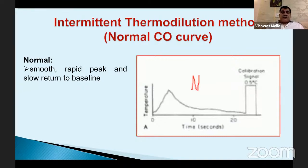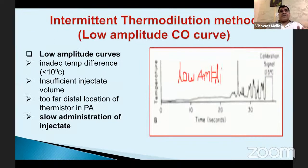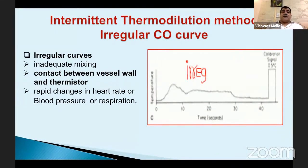We should know the signature graphs. A normal graph is crisp with smooth, rapid peak and slow return to baseline. A low amplitude graph indicates unreliable cardiac output — possible causes include inadequate temperature difference, insufficient injected volume, or slow injection speed. An irregular graph may indicate the catheter is hugging the pulmonary artery wall or there are rapid changes in heart rate, blood pressure, or respiration.